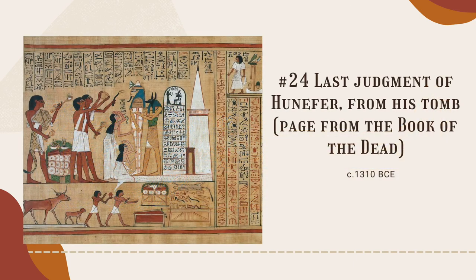The Book of the Dead, although ominous sounding, was actually known as the Book of Coming Forth by Day, or Book of Emerging Forth into the Light, during the ancient Egyptian period. It was a funerary text consisting of magic spells and instructions on how to make it through the duat, or underworld, and into the afterlife. 'Book' is a rather generous term, as it was more of a collection of texts written over about a thousand years by priests. This page is from an excellent surviving example — it was made for a man named Hunefer, who lived around 1310 BCE, and held many esteemed positions including royal scribe, scribe of divine offerings, overseer of royal cattle, and steward of Pharaoh Seti.